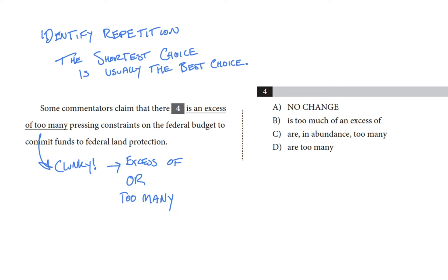This doesn't neatly fit into our five categories because many is being used as an adjective to modify constraints, but it is still very awkward to look at. Excess of too many is the no change answer, and I think it's too clunky to stay, so I'm going to eliminate that one. Choice B is 'too much of an excess of' — that uses nearly the same construction, just in a slightly different order, so I'm going to cross that one off too.